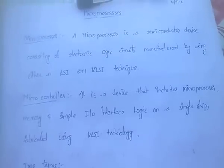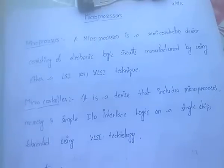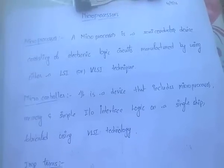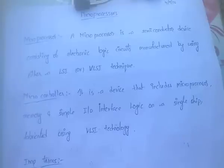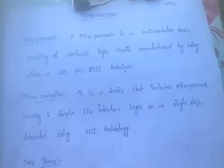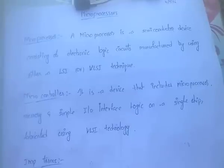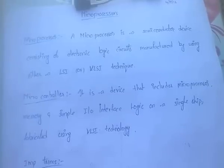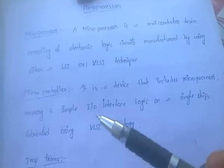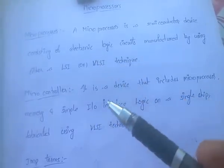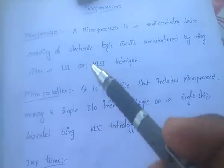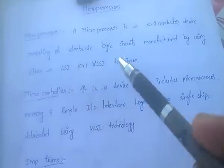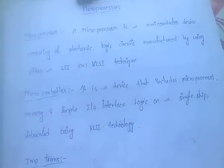First of all, what is a microprocessor? A microprocessor is a semiconductor device consisting of electronic logic circuits manufactured by using either a LSI (Large Scale Integration) or VLSI (Very Large Scale Integration) technique.